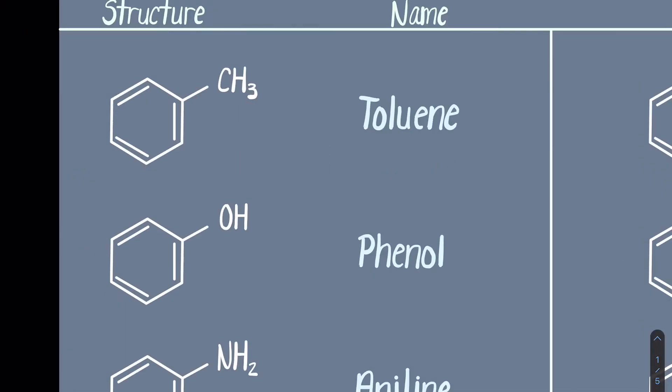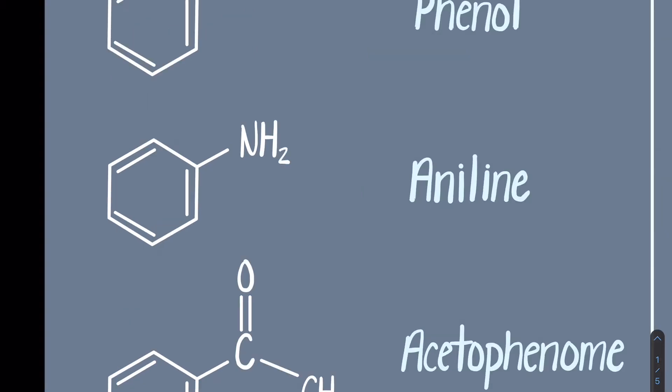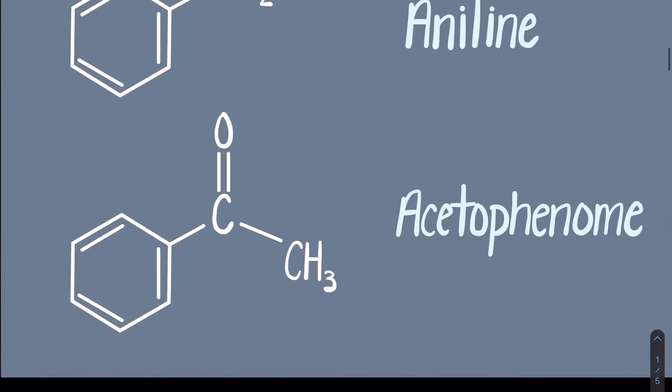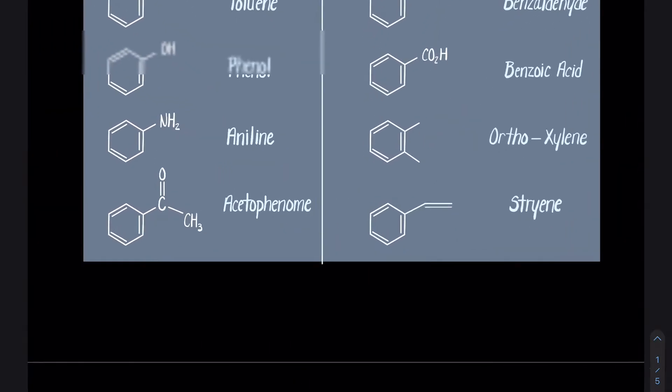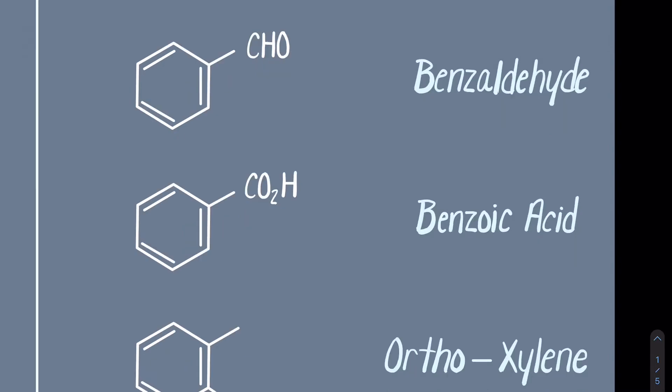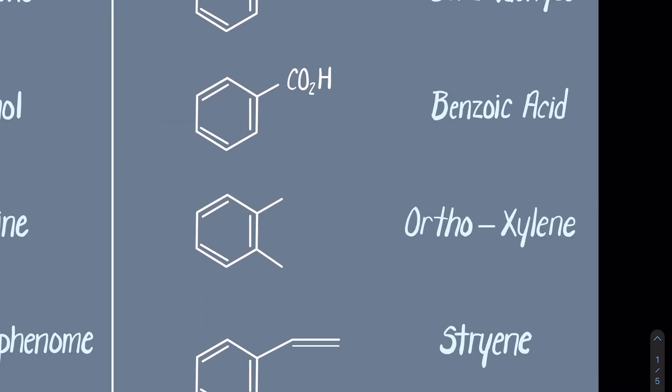So if we're looking at a benzene ring with a methyl group attached, it's toluene. If we're looking at a benzene with an alcohol attached, it's known as a phenol. With an amine attached, it's known as an aniline. With a methyl ketone attached, it's known as an acetophenone. With an aldehyde attached, meaning a carbonyl with a hydrogen, it's benzaldehyde. With a carboxylic acid attached, benzoic acid. Ortho xylene is dimethyl benzene.